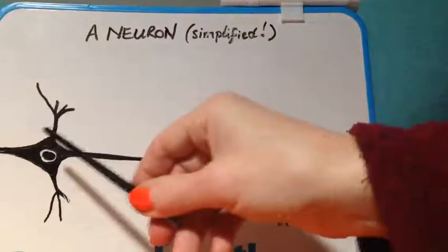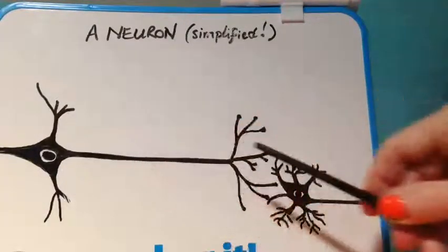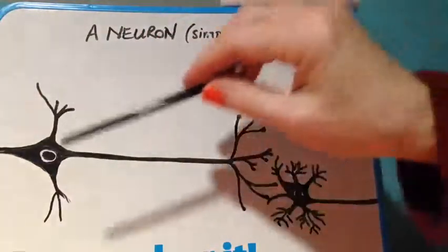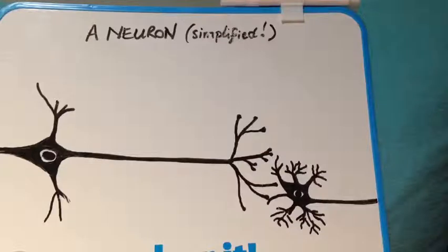And eventually the brain starts to create connections or pathways between the neurons, so the things that you are learning become easier and you can do them better and better.